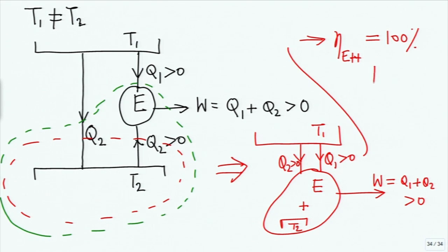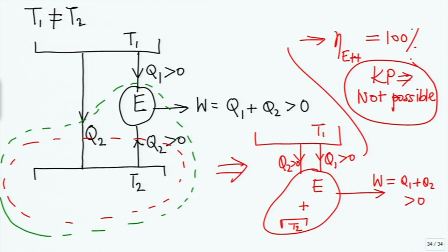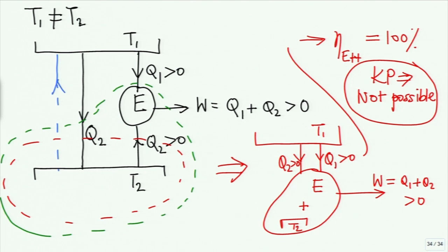This, by Kelvin-Planck's statement, is not possible. Then you can argue that it may not be possible to transfer heat from T1 to T2, but it may be possible to transfer it from T2 to T1. Again, you can have the same argument. Now you extend the engine by adjusting equal to Q1, then extend the engine to include T1 in it, and you will come to the same conclusion.